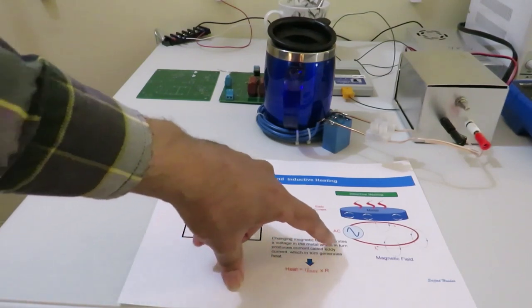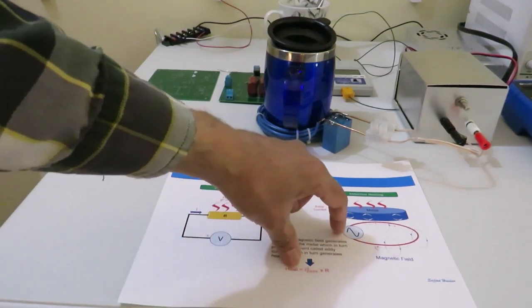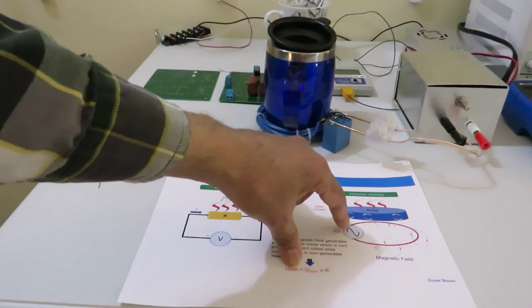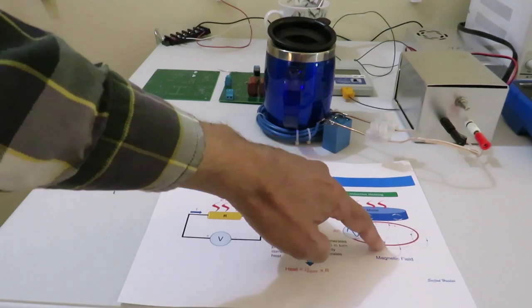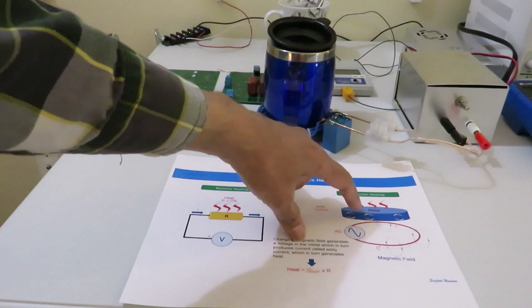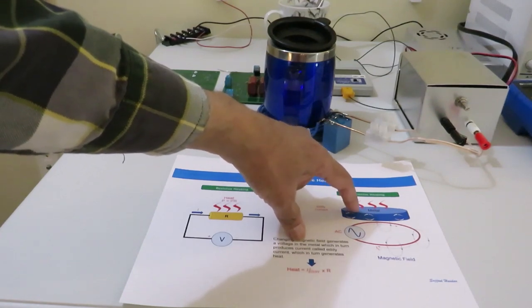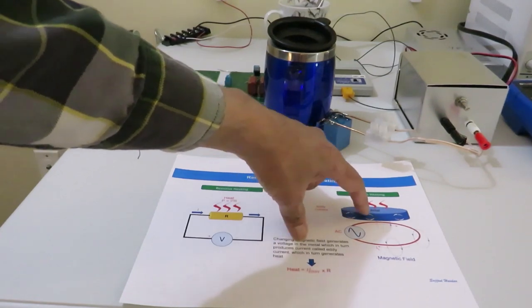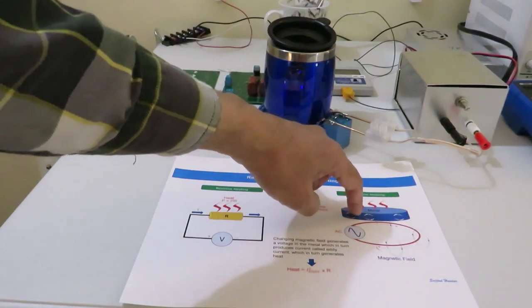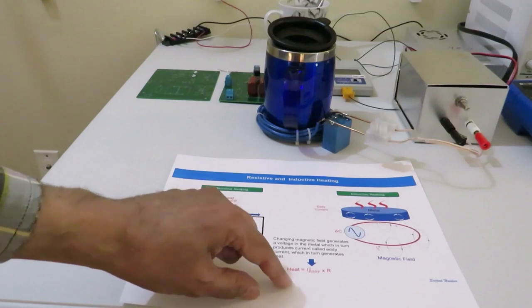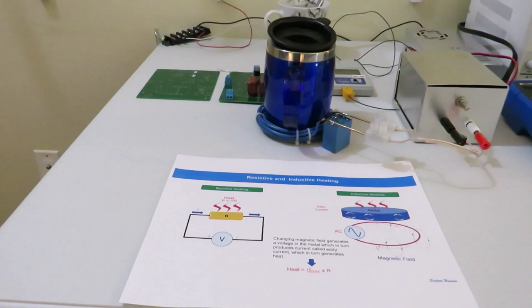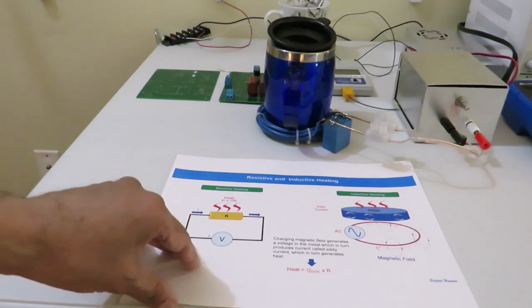In case of induction heating, a conductive loop is powered by an alternating source. As a result, alternating magnetic field will be created. And this magnetic field will create induced voltage if a metal block is placed very close to that loop. As a result, eddy current will be generated within that metal piece. And the power is represented the same way as the resistive heating, eddy current squared into R.